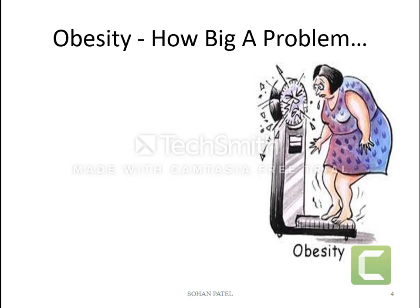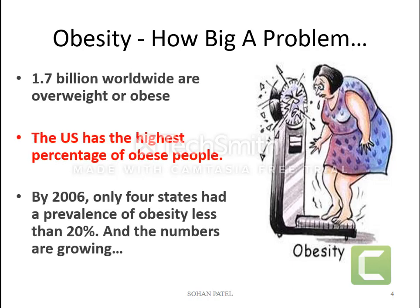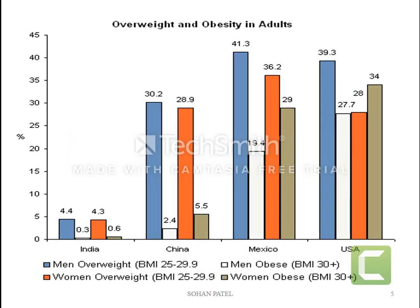Obesity is a big problem. 1.7 billion worldwide are overweight or obese. The US has the highest percentage of obese people in the world. By 2006, only 4 states had a prevalence of obesity less than 20%, and the number is growing daily. This epidemiological data clearly says obesity is not a simple disease — it is a very complex disease. Compared with countries like China, Mexico, and USA, India has a lower population suffering with obesity, but this ratio is increasing day by day.